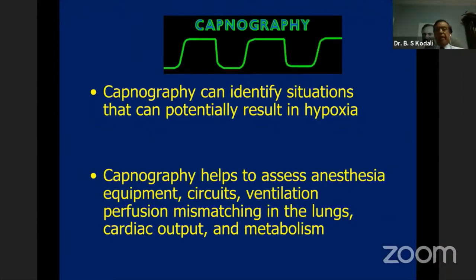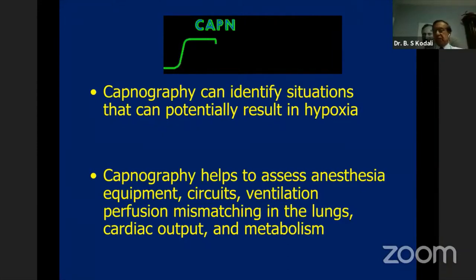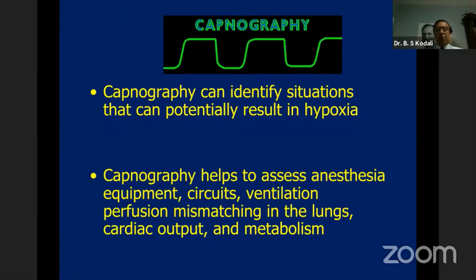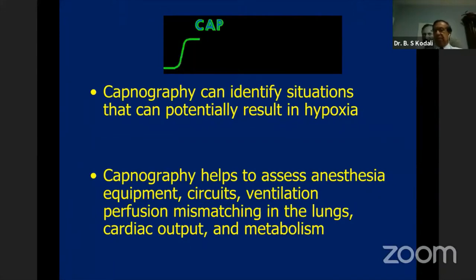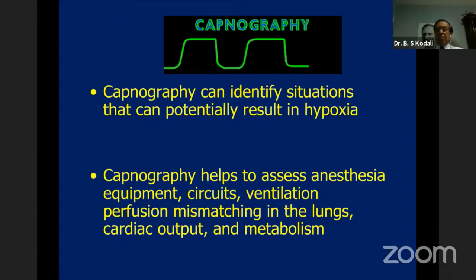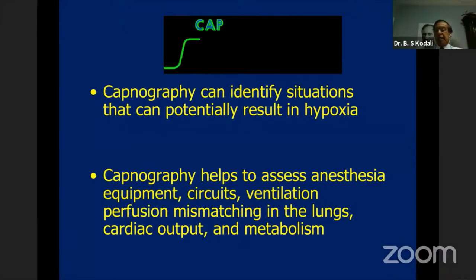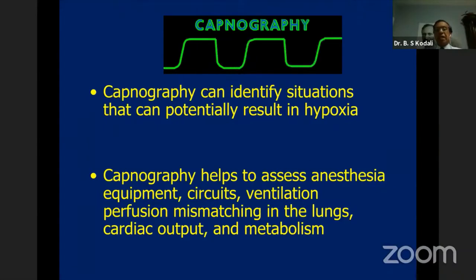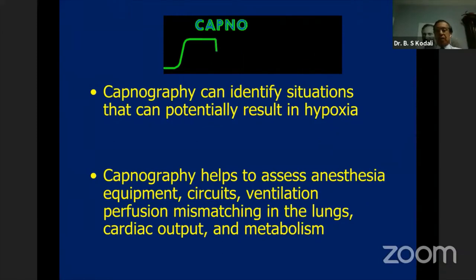One thing to remember is that pulse oximeter is a direct monitor — it tells you whether the patient is hypoxic or not. Whereas capnography is an indirect monitor. In order to diagnose a clinical situation using capnography, you have to understand it thoroughly so you can make a correct assessment of a situation that could either be leading to hypoxia or potentially could lead to hypoxia.